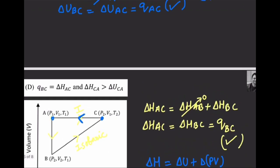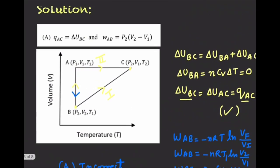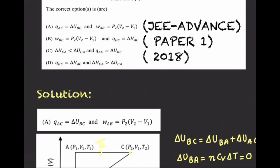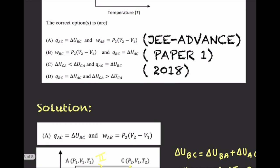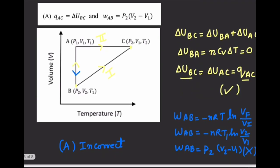Going through all four options: option A was wrong because one part was incorrect, option B is correct, option C is correct, and option D is wrong. So the final answer is B and C. Hope this information and the concepts asked in this question are useful to you. If you like it, please like and subscribe to our channel. Thank you.